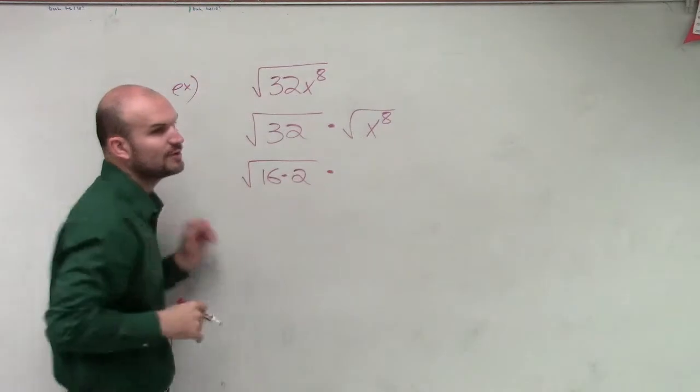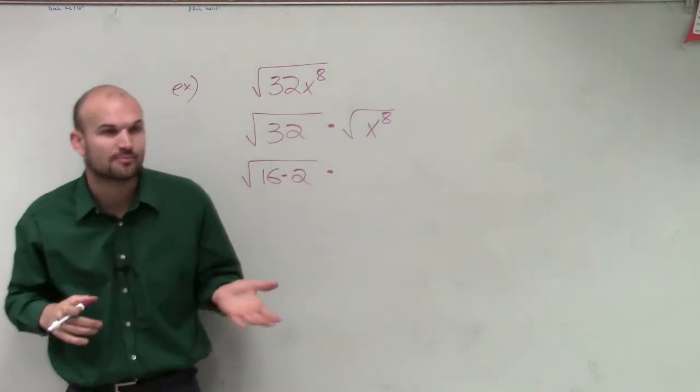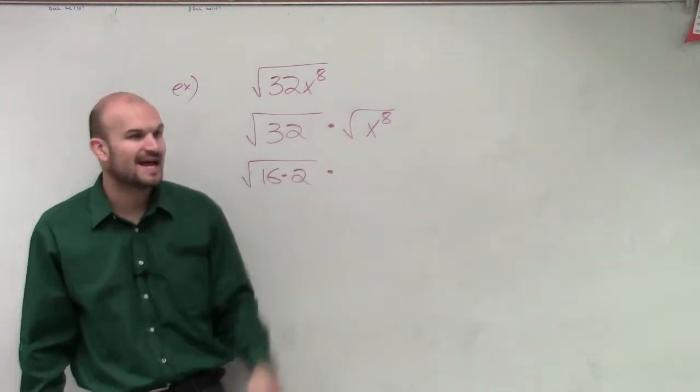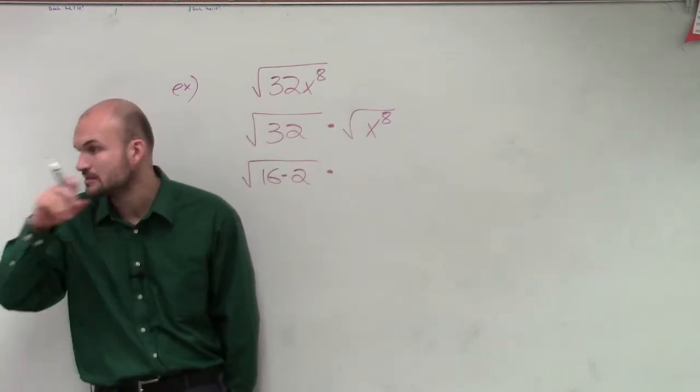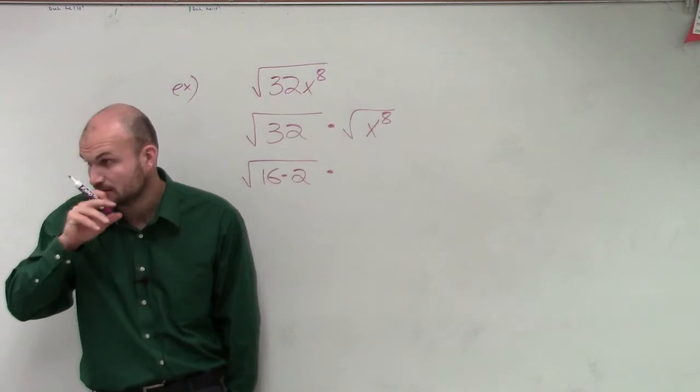And then here, how can I rewrite this as a number by using the properties of exponents? How can I write x to the eighth as something squared, as a term squared? Yes? X to the second and x to the fourth.